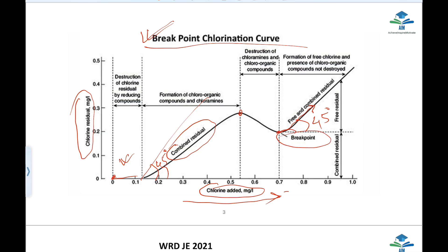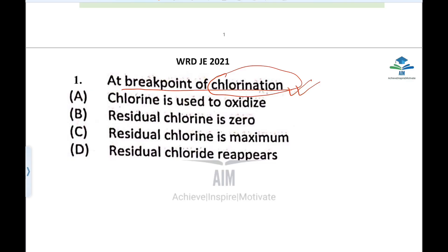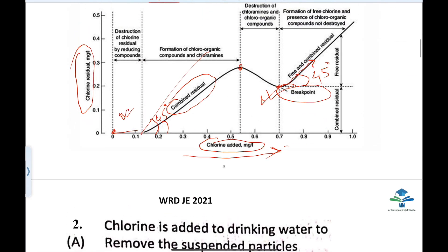This is the breakpoint of chlorination. After this point, the free residual chlorine will start to increase. The breakpoint is where residual chlorine begins to reappear as free chlorine.